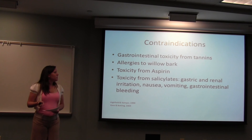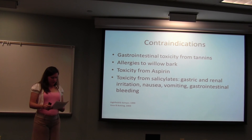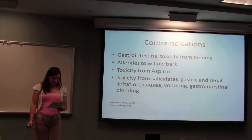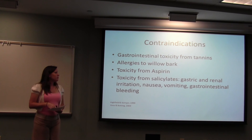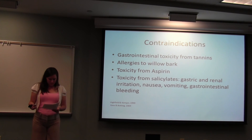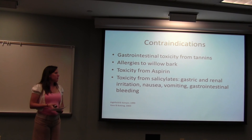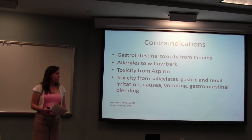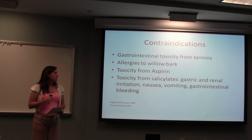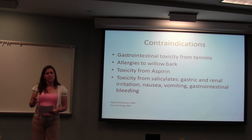Regarding contraindications: high levels of tannins cause gastrointestinal toxicity. Salicin is potentially toxic in high doses, and there are potential allergies to willow bark. There is also toxicity with aspirin due to high levels of salicylates. The toxicity from salicin causes gastric and renal irritation, nausea, vomiting, and gastrointestinal bleeding.